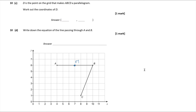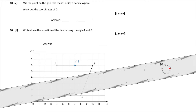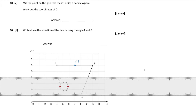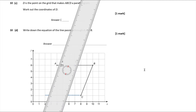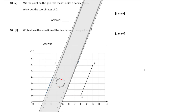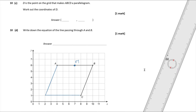Question 10c — D is the point that makes ABCD a parallelogram. A parallelogram has two pairs of parallel sides. Line AB is six units horizontally, so CD must also be six units horizontally. Counting six units leftward from C brings me to point D. Joining D to A completes the parallelogram. The coordinates of D are (2, 1).